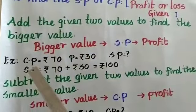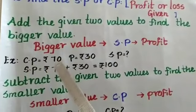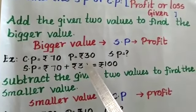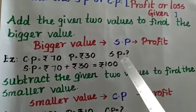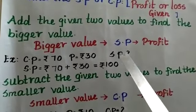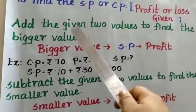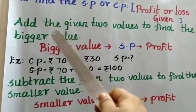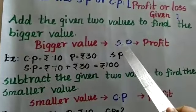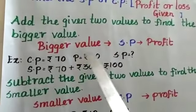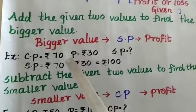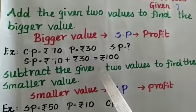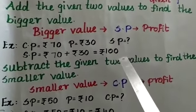For example, the cost price is Rs. 70 and the profit is Rs. 30. We are going to find the selling price. What is the selling price? It is the bigger value. If you are going to find the bigger value, you should add the given two values. So, 70 plus 30, we will get the answer as Rs. 100.